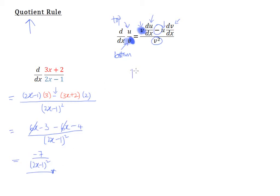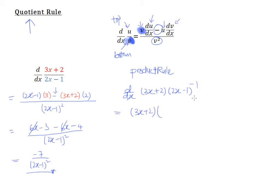You can actually force the product rule to work for this example. To differentiate this fraction is the same as differentiating 3x plus 2 multiplied by (2x minus 1) to the power of negative 1. We apply the product rule: keep 3x plus 2 and differentiate (2x minus 1)^(−1) using the chain rule — the power becomes negative 2, and we differentiate the inside.